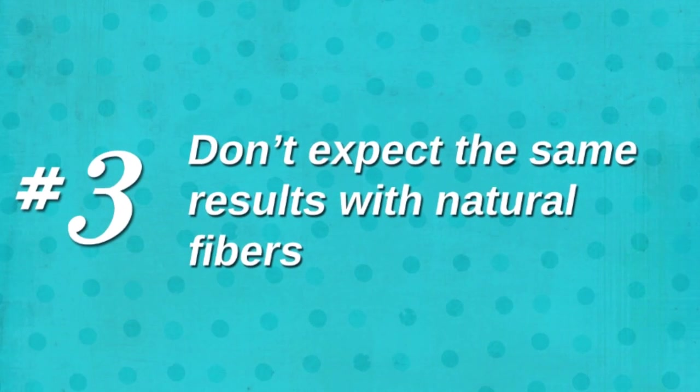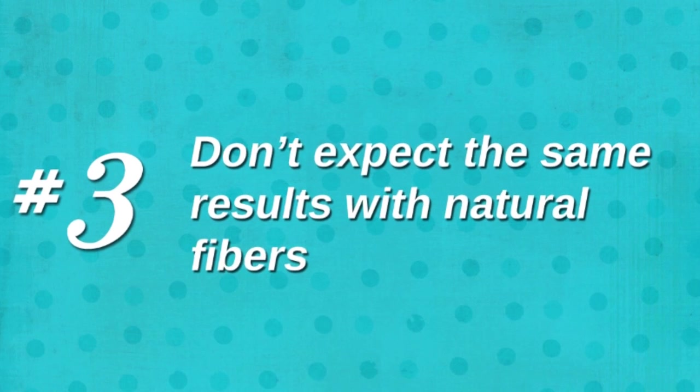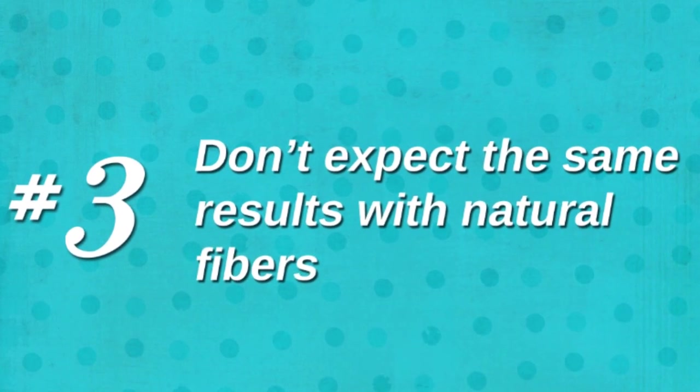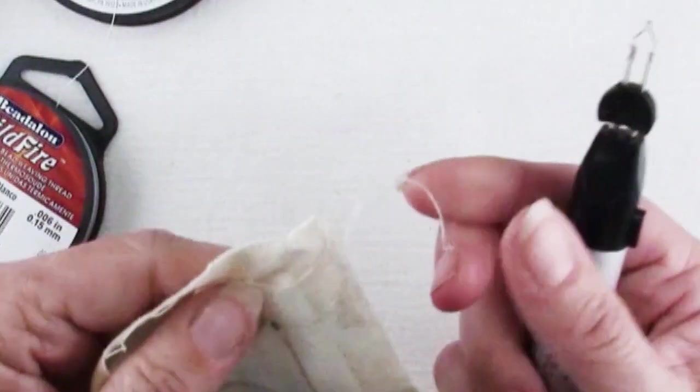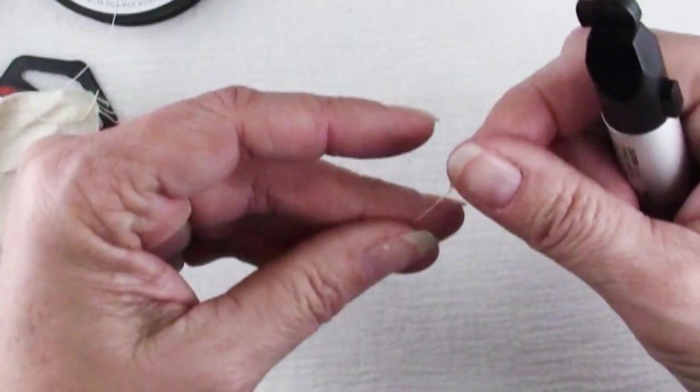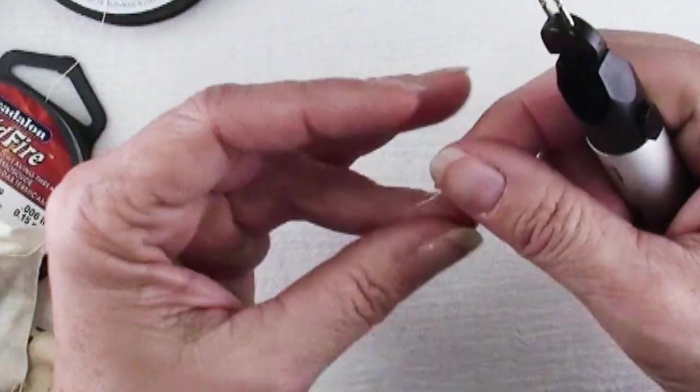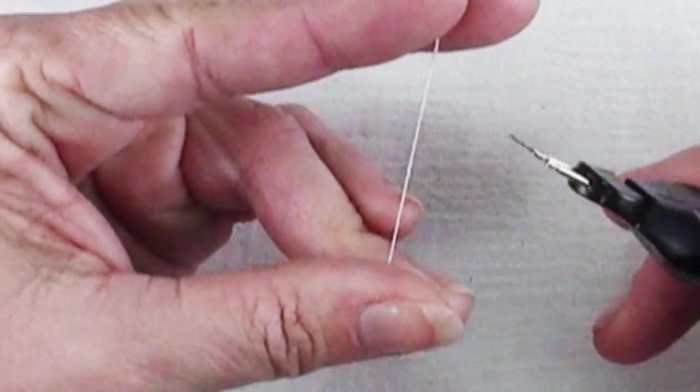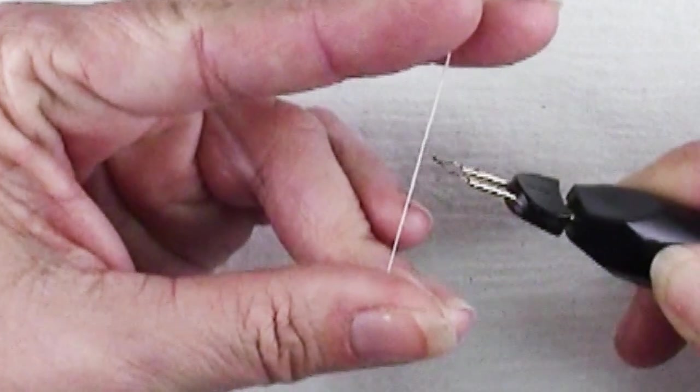The third thing you should never do with a thread burner is to use it on natural fibers like cotton and hemp and wool. So here I have just a scrap of cotton fabric and I'll pull a thread off. I didn't actually have any 100% cotton thread because most of our thread is polyester, so watch what happens here.